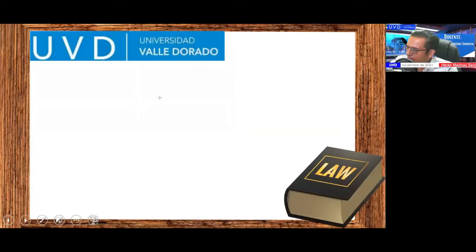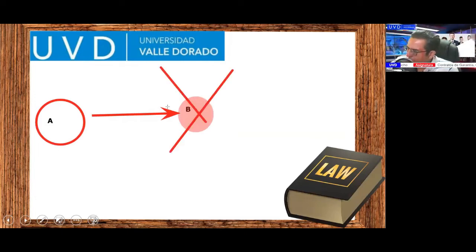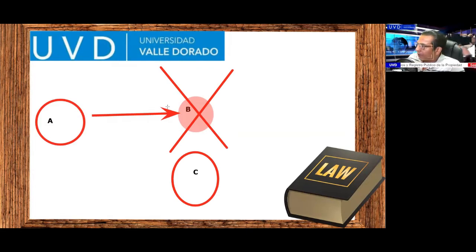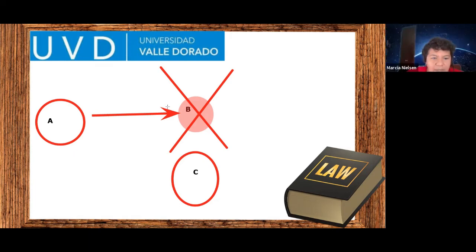The teacher clarifies: consider that A lent money to B. B as debtor did not fulfill the obligation. C commits to pay this obligation. The gratuity implies that C, by fulfilling the obligation, has no counterprestación — no benefit. C does it so the obligations are met. The gratuity means there is no benefit; payment is made without obtaining any benefit from celebrating this type of contract.